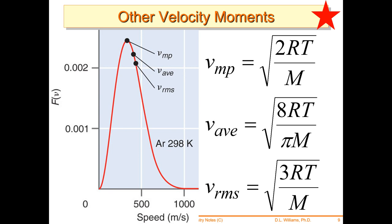One is √(3RT/M) for root-mean-squared, another is √(8RT/πM) for average velocity, and the most probable is √(2RT/M). So instead of a factor of 3, it's 8/π for the average, and the most probable is even smaller at 2.